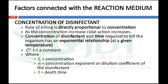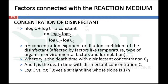The next factor is concentration of disinfectant. The rate of killing is always directly proportional to the concentration, so as concentration increases, the biocidal action also increases. The concentration of disinfectant and the time required to kill the organism are in an exponential relationship, given by the equation C^n × t = constant, where C is the concentration, n is the concentration exponent or dilution coefficient of the disinfectant, and t is the death time. The value of n can be calculated by: n = (log t2 − log t1) / (log c1 − log c2), where t1 and t2 are the death times at concentrations c2 and c1 respectively.